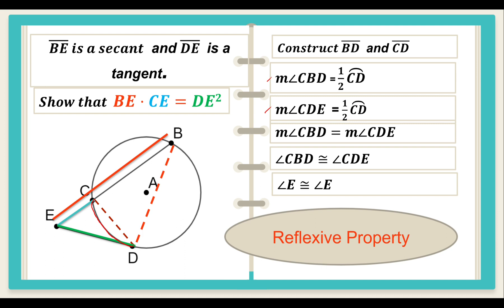It is at this moment a little bit difficult to visualize where the triangles are involved, since we already have two pairs of congruent angles. So let us separate the triangles to clearly see where the congruent parts are.